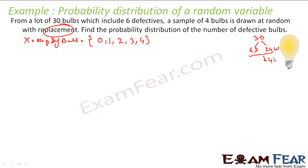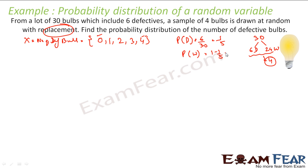So X can take values 0, 1, 2, 3, and 4 — since you are taking out 4 bulbs, it can happen that none or all 4 are defective, or 1, 2, or 3 bulbs are defective. Now since it is with replacement, the probability of a defective bulb is 6 by 30, which is 1 by 5. And probability of a working bulb is 1 minus 1 by 5, that is 4 by 5. Since it is with replacement, this holds true every time.